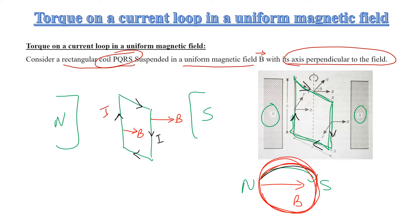From the last lecture, we have Fleming's left hand rule. According to this rule, the thumb represents force, the middle finger represents magnetic field, and the center finger represents current. So we apply this rule: the thumb points in the direction of force, the middle finger aligns with the magnetic field, and the center finger points in the direction of current.